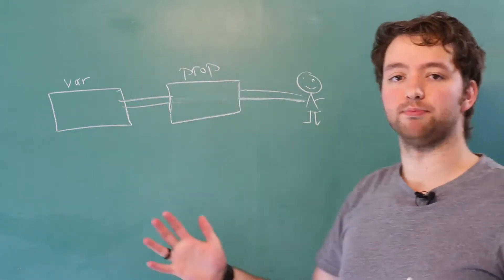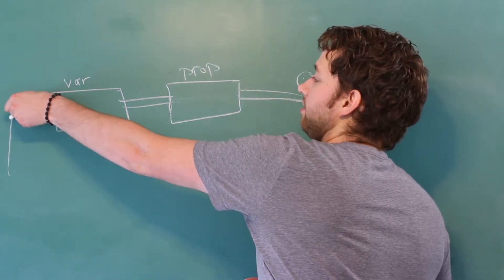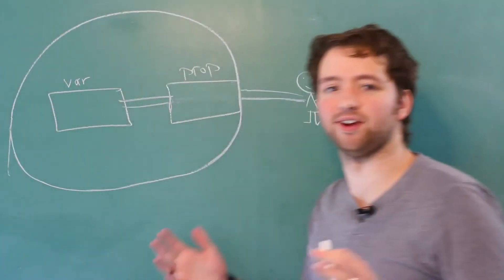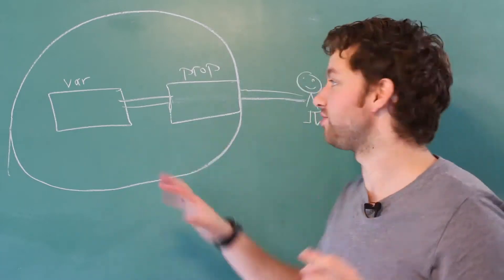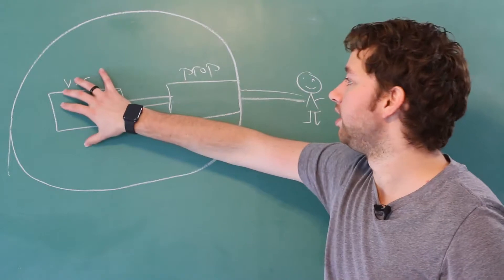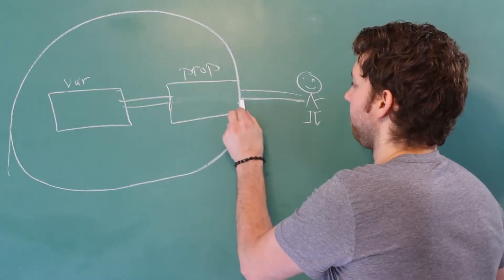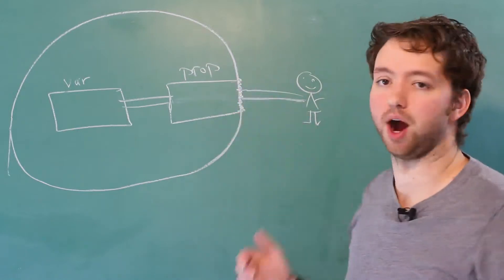This is the perfect example of encapsulation. So basically, we put this circle around the field. Maybe there's a terrible way to illustrate it. But essentially, we put a force field around this variable.